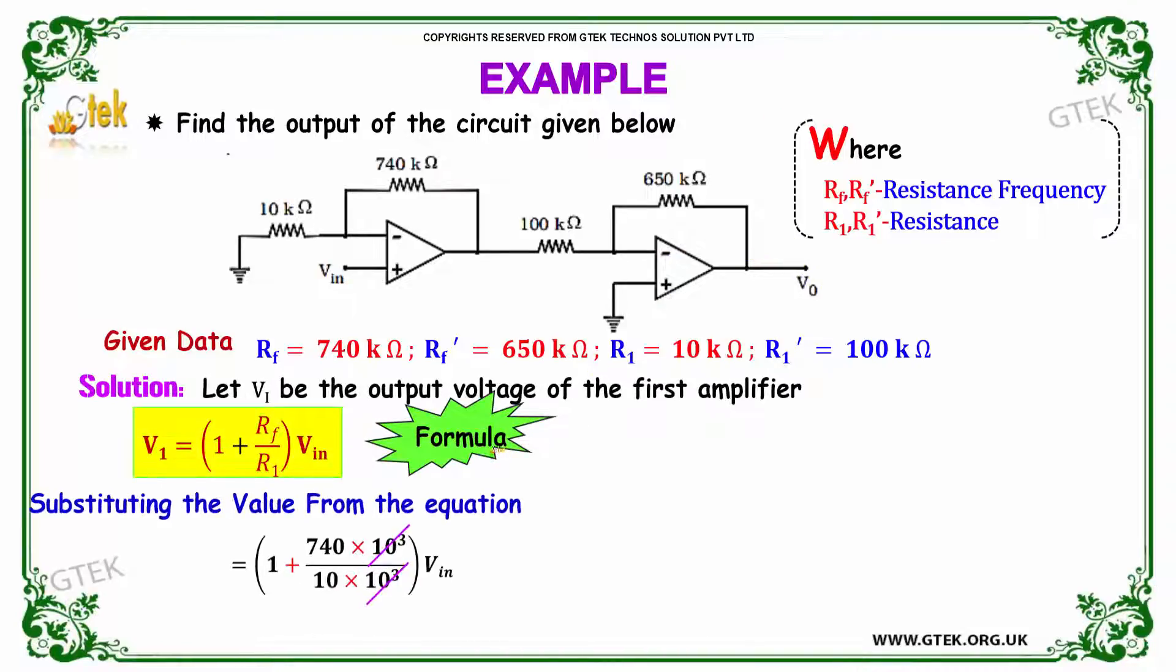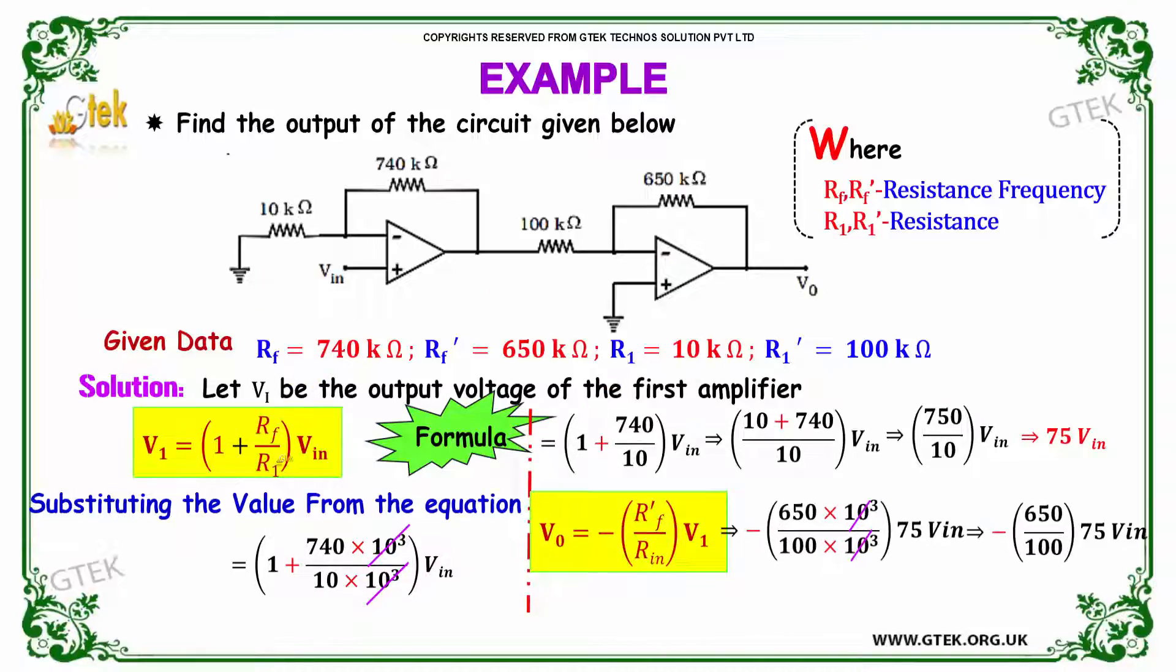The solution is V1 is equal to 1 plus Rf divided by R1 into Vin. Substitute the value of Rf and R1 here. You will be getting, this one is cancelled, 1 plus 740 divided by 10 into Vin. So 10 plus 740 divided by 10 into Vin, so 750 divided by 10 into Vin. We got 75 into Vin.